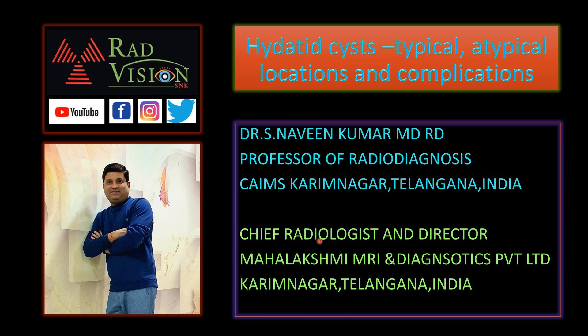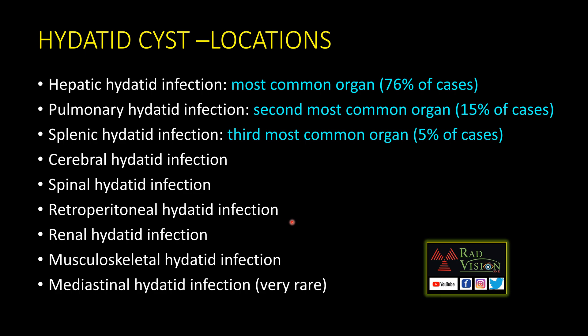In this video, we will discuss hydatid cysts and their complications. The typical locations are: most common is the liver, followed by lung, followed by spleen. These are the typical locations. Atypical locations include cerebral, spinal, retroperitoneal, renal, musculoskeletal, and mediastinal.